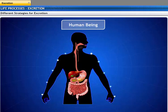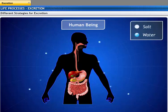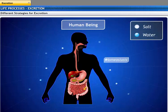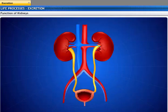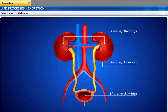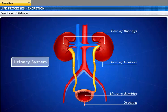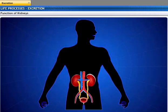Human beings have a specialized excretory system for the removal of metabolic wastes. In addition to excretion, it also maintains salt, water, and body fluid balance. This regulatory mechanism is called homeostasis. The excretory system in human beings includes a pair of kidneys, a pair of ureters, a urinary bladder, and a urethra. This is referred to as the urinary system.